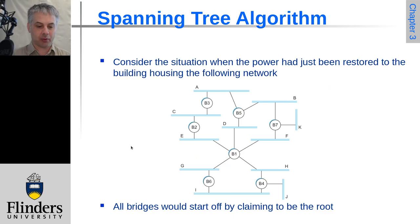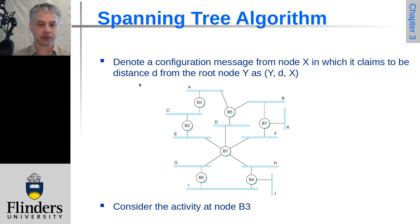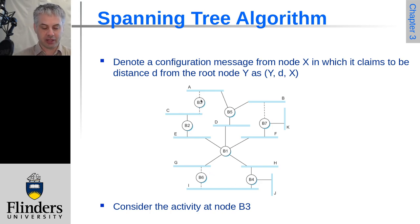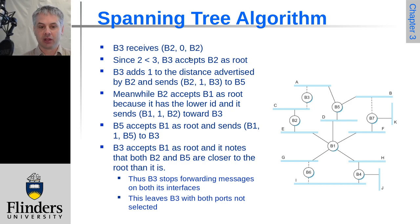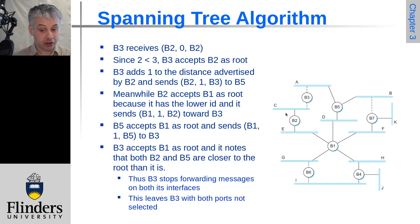Looking at that same network from startup: all bridges — one through seven — initially claim to be the root node. Each configuration message is of the form: from node X, claiming to be distance D from root node Y. Looking at bridge three: it receives a message from bridge two where bridge two claims to be the root, and since two is less than three, bridge three accepts this. Bridge three then transmits saying it is one hop from root bridge two, sending that to bridge five but not back to bridge two since bridge two already knows it's the root.